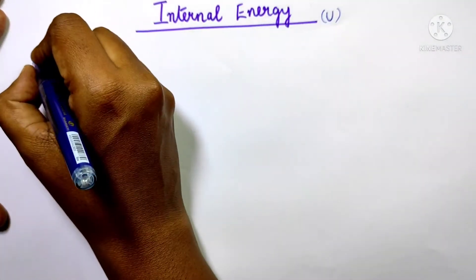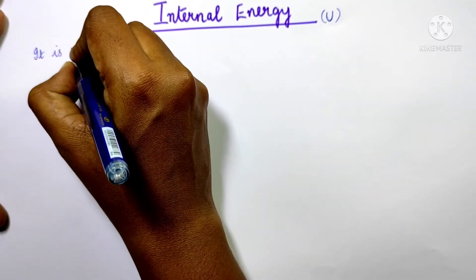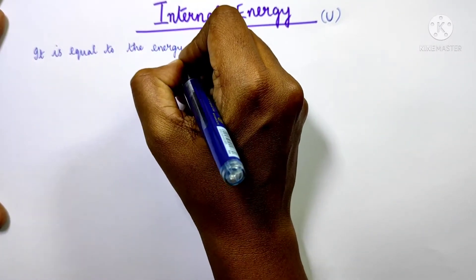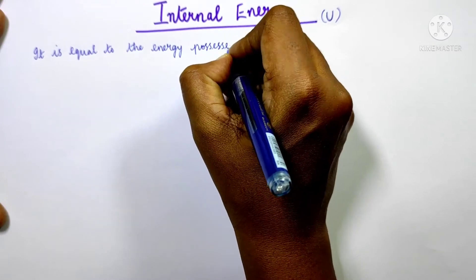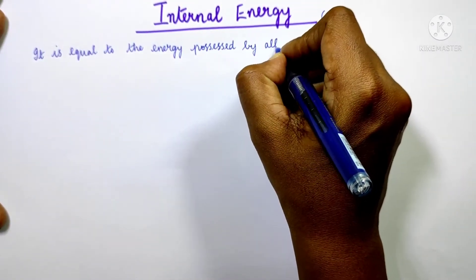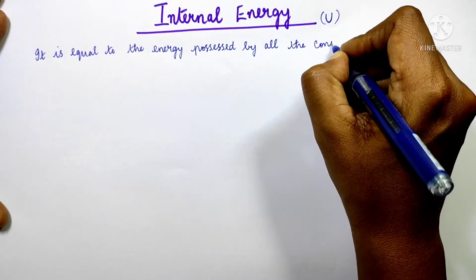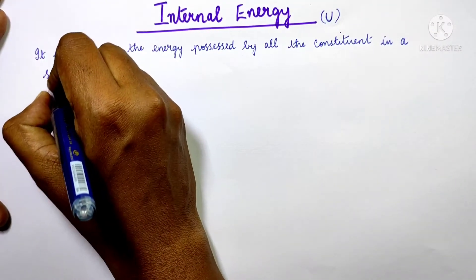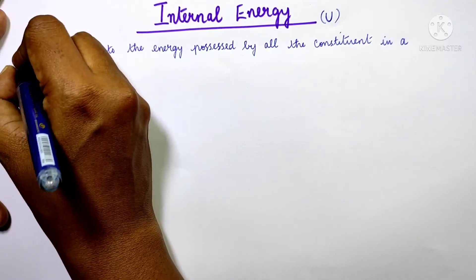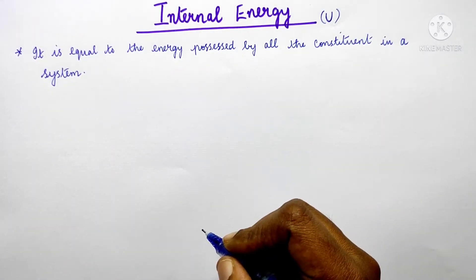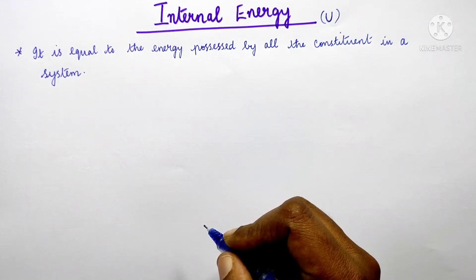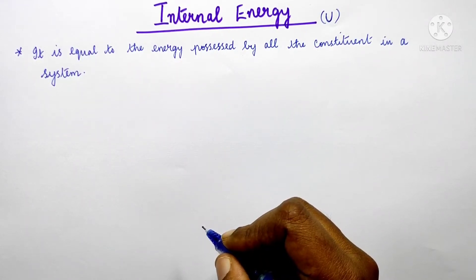Internal energy — it is equal to the energy possessed by all the constituents in a system. The constituents in one system can be atoms, ions, or molecules. So whatever energies all those constituents in a system possess, that is what we call internal energy.